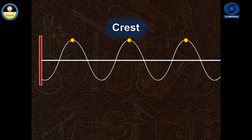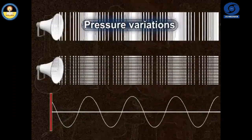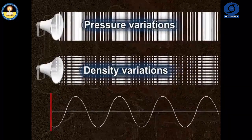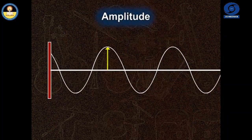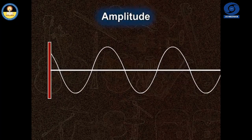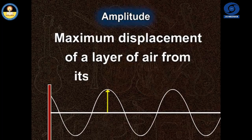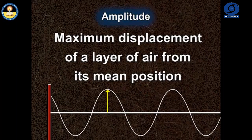A peak is called crest and a valley is called trough of the wave. It can also be defined as the maximum displacement of a layer of air from its mean position when the sound waves propagate through the air. It is usually represented by letter A.